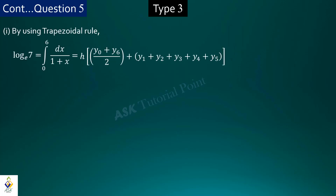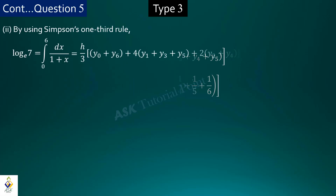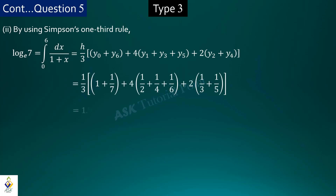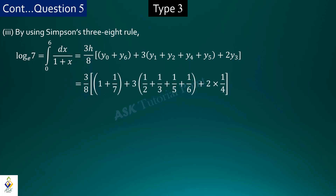Constructing the table, we first apply the trapezoidal rule and get the approximate value 2.0215. Then applying Simpson's one-third rule, the calculation gives 1.9588. Similarly, applying Simpson's three-eighth rule and putting all values from the constructed table into the formula, we get log 7 equal to the integration from 0 to 6 of dx/(1 plus x) equals 1.966.